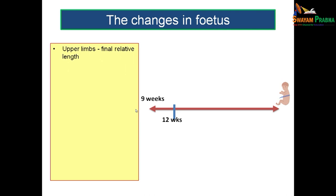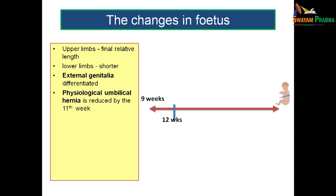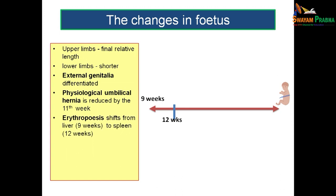During 9 to 12 weeks, the upper limbs reach their relative final length while the lower limbs are somewhat shorter. The external genitalia are differentiated. The physiological umbilical hernia is almost reduced by the end of the 10th week or early 11th week. By the end of the 12th week, erythropoiesis shifts from the liver to the spleen, and urine is discharged into the amniotic fluid.